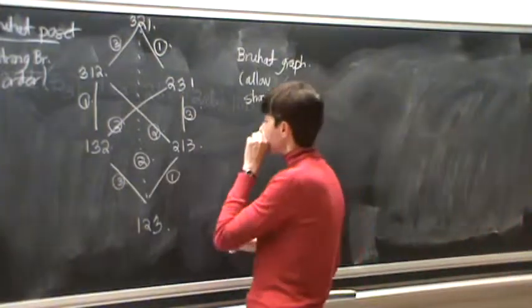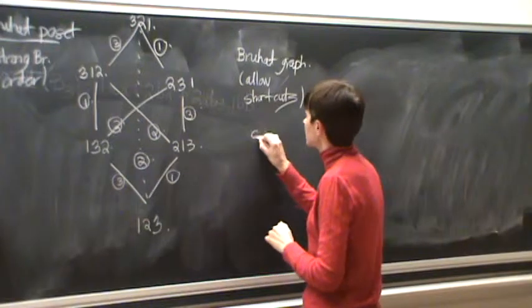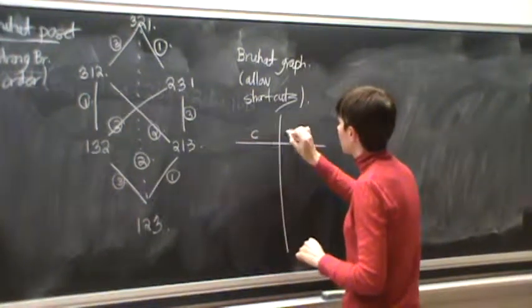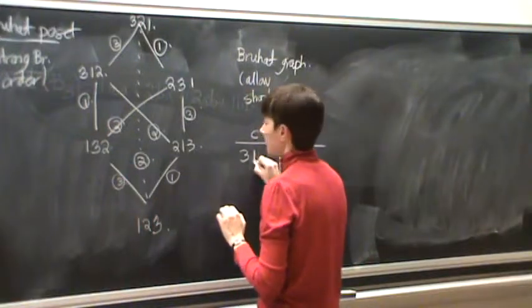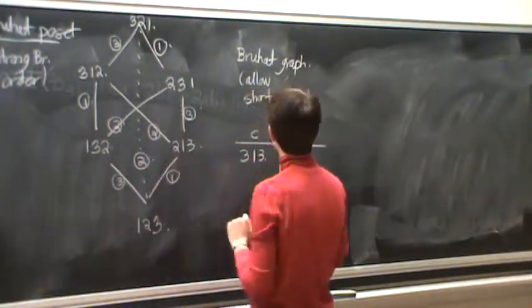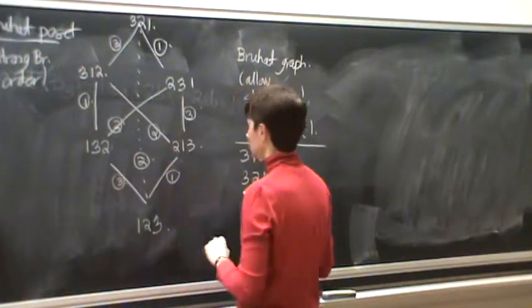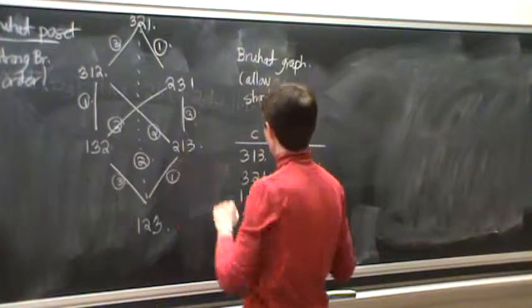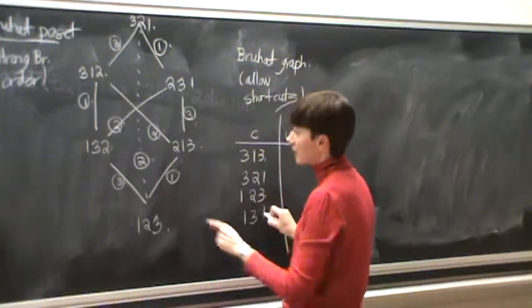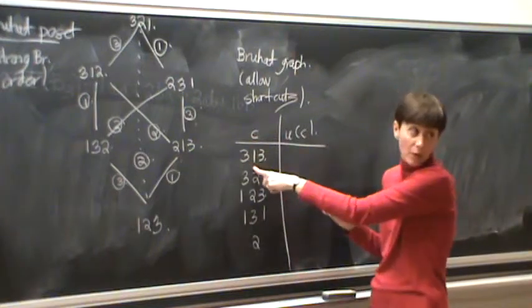And let's write down the maximal chains in this. Let's look at this. So we look again at encoding the maximal chains and their descent sets. So here, maximal chains, three, one, three. Here we have three, two, one. So we have one, two, three. Okay, I'm going to make my mistakes. One, three, one. Then I have the shortcut, two. When I look at their descents, three goes down to one.